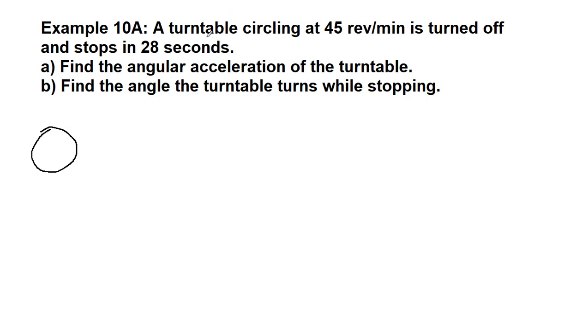So we have a turntable, something that plays records, and it's circling at 45 revolutions per minute. Right away we know that it's circling, so our picture is our step 1. Our step 2 is making a list of the given information.